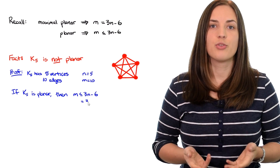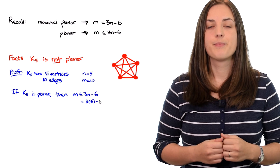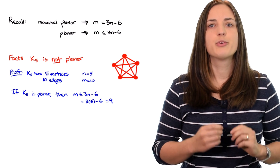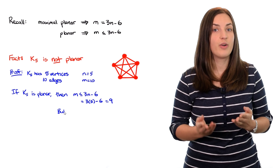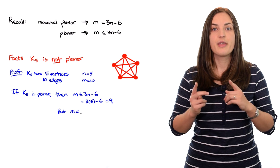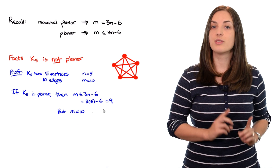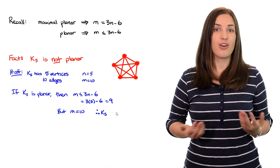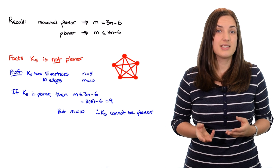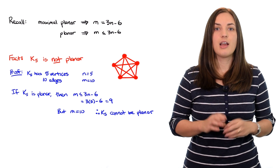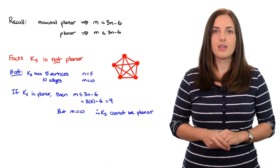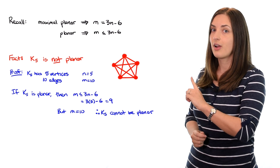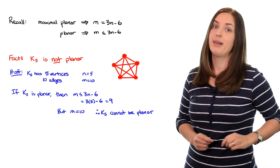We know what n is so let's plug it in. We get that m has to be less than or equal to nine, but we already know that m equals 10. Therefore K5 cannot be planar — if it was, it would have to have at most nine edges. That was a really simple proof using an important bound on the number of edges.